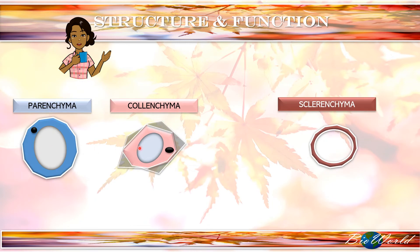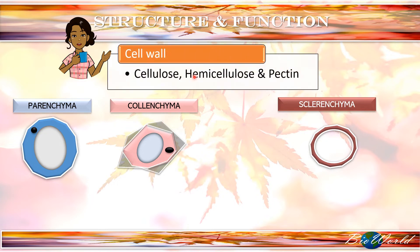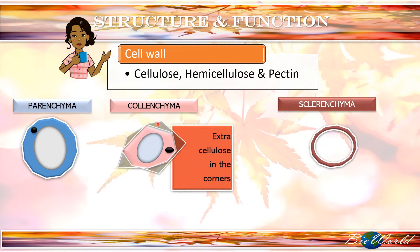Besides having similarity in structure, these three cells also share similarity in cell wall content, whereby the cell wall is made up of cellulose, hemicellulose and pectin. There are also differences in the cell walls of these three cells. The parenchyma has a thin cell wall, whereas the collenchyma has an unevenly thickened cell wall — at the corners, the cell wall has extra cellulose deposited. In the case of sclerenchyma, we find that the cell wall has become lignified, meaning that the cell walls have been added with lignin.